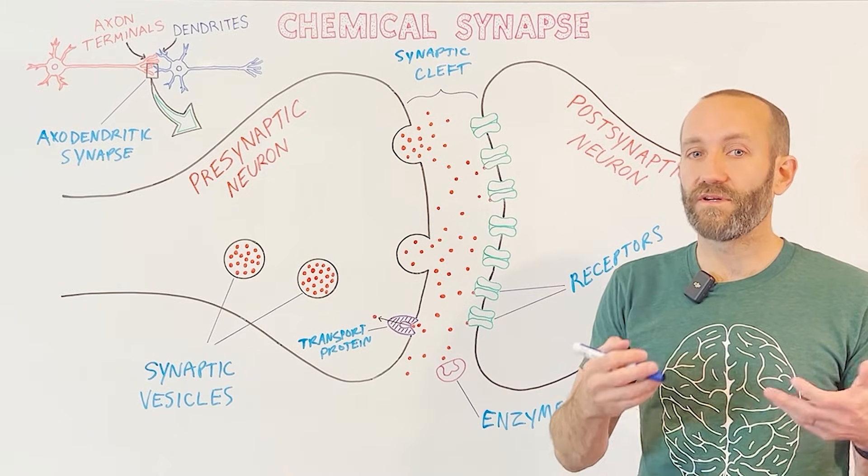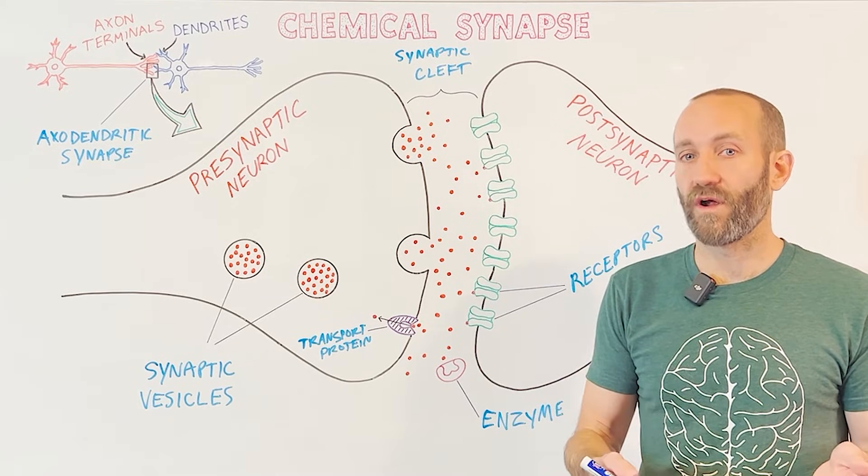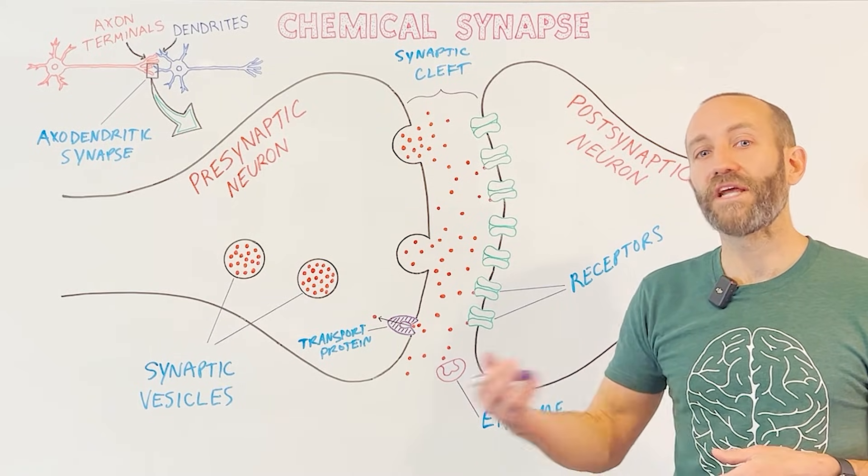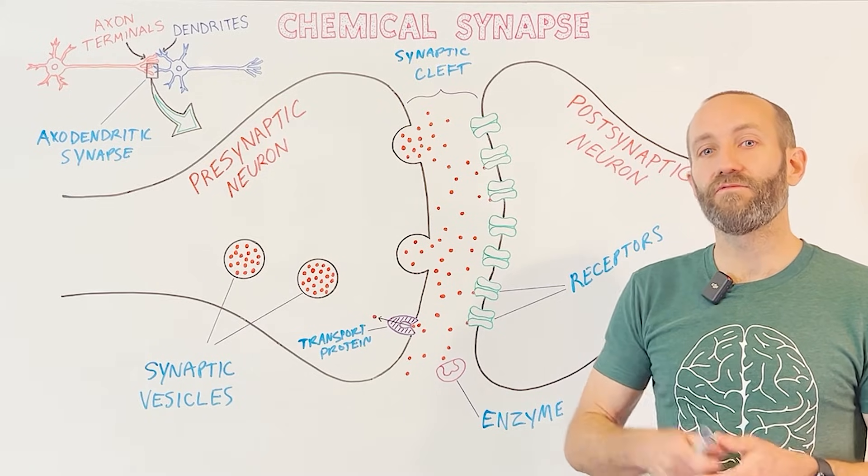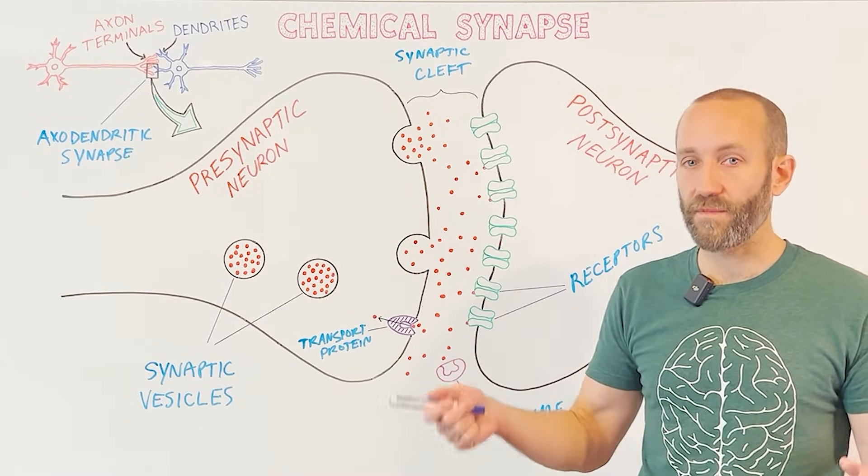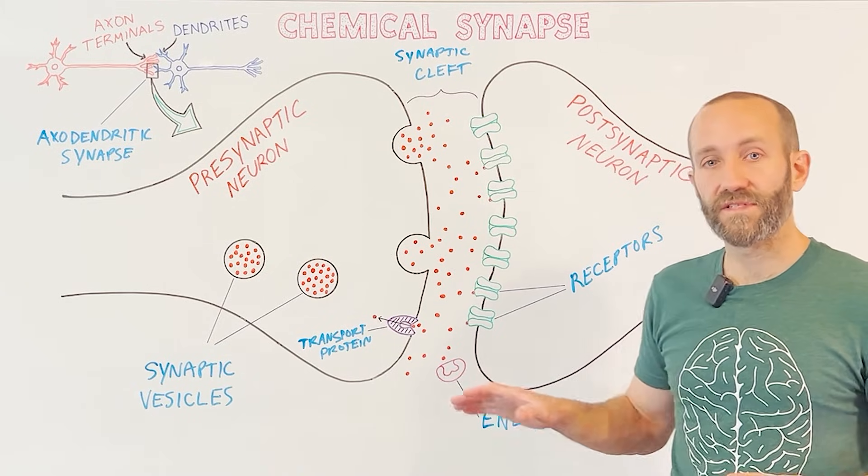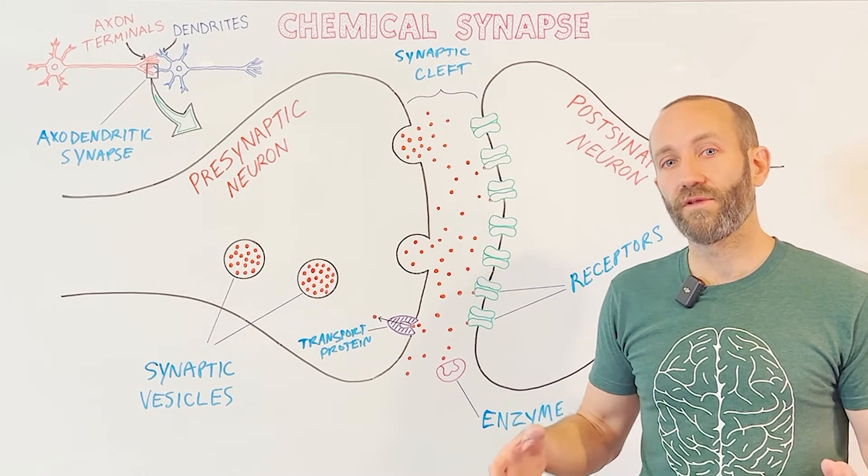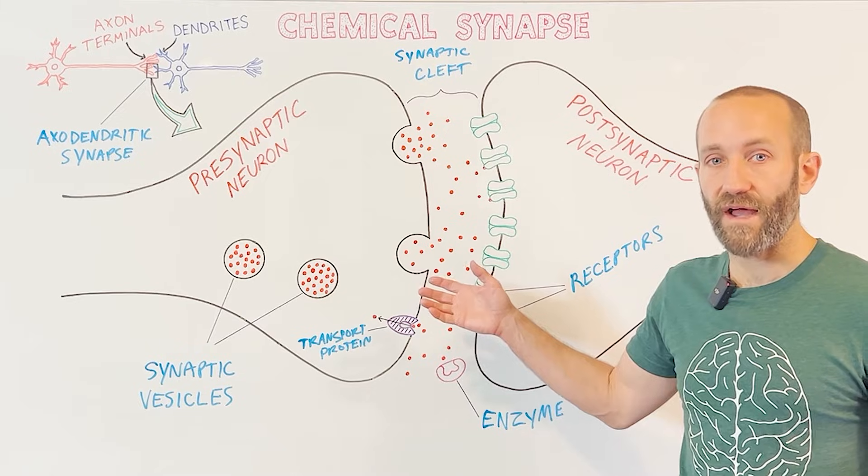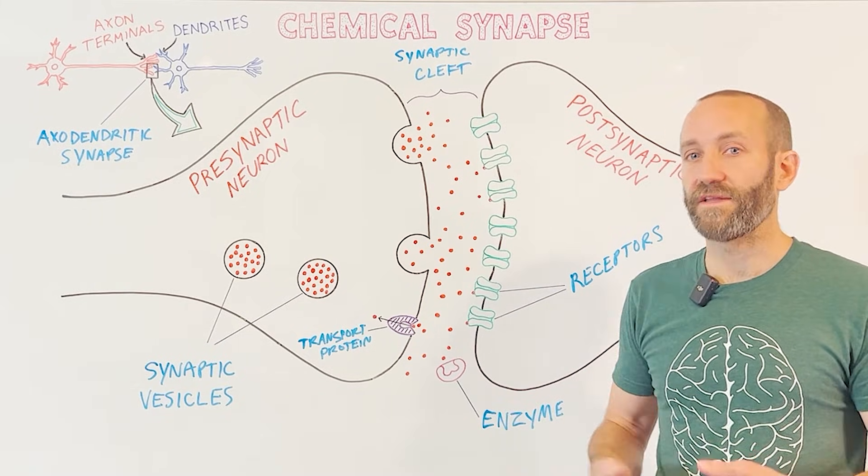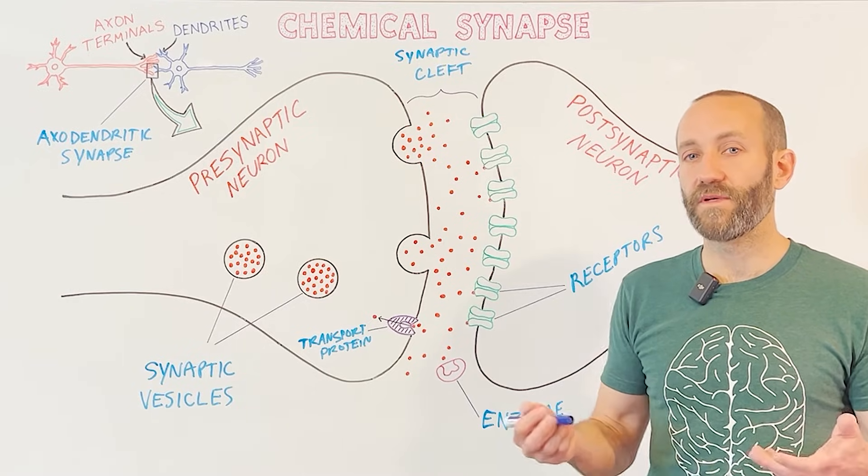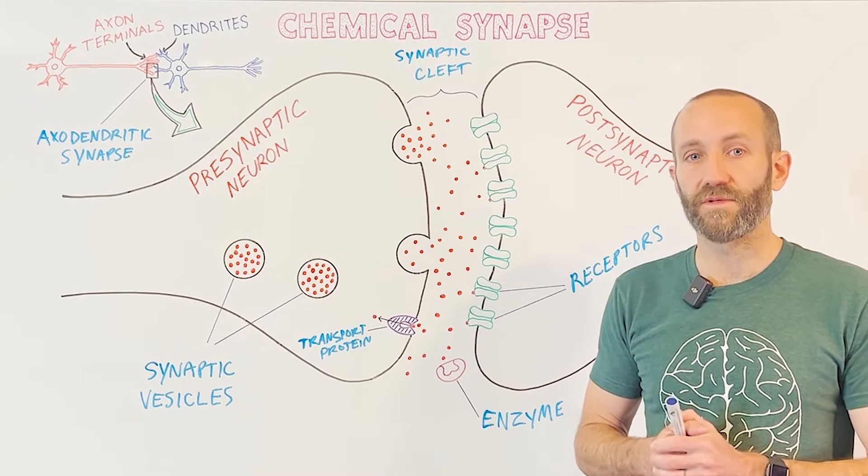The process of reuptake is important to understand because it's a target for a number of drugs. Selective serotonin reuptake inhibitors, for example, or SSRIs, are drugs that inhibit the reuptake of serotonin, and they're our most common treatment for depression. By inhibiting the reuptake of serotonin, this makes serotonin more likely to accumulate in the synaptic cleft, thereby increasing serotonin levels. And for reasons that we don't fully understand, this increase in serotonin levels seems to be associated with an improvement of depressive symptoms in some people.